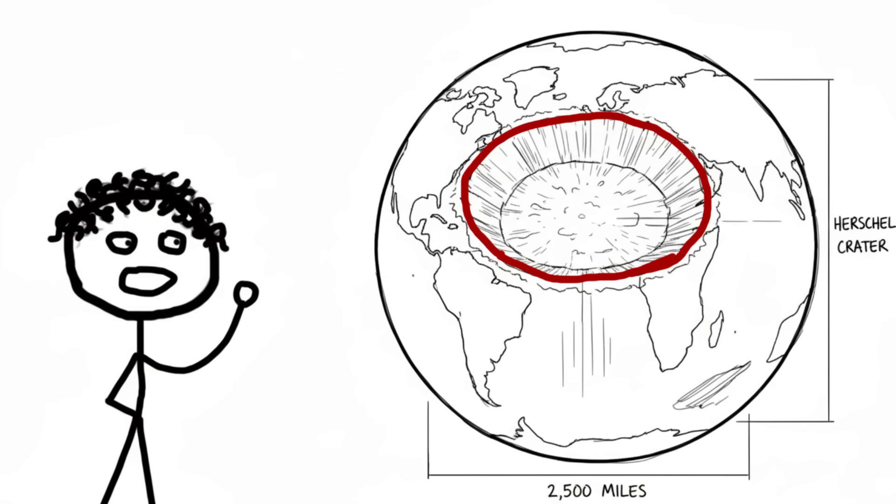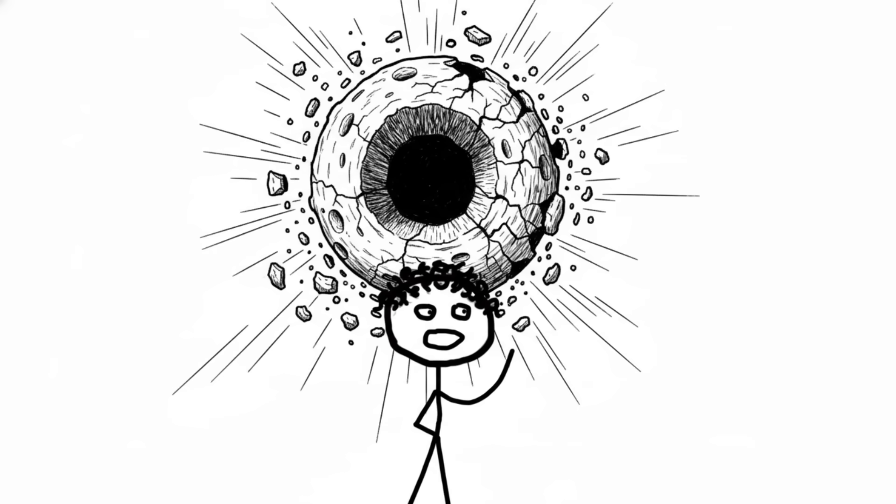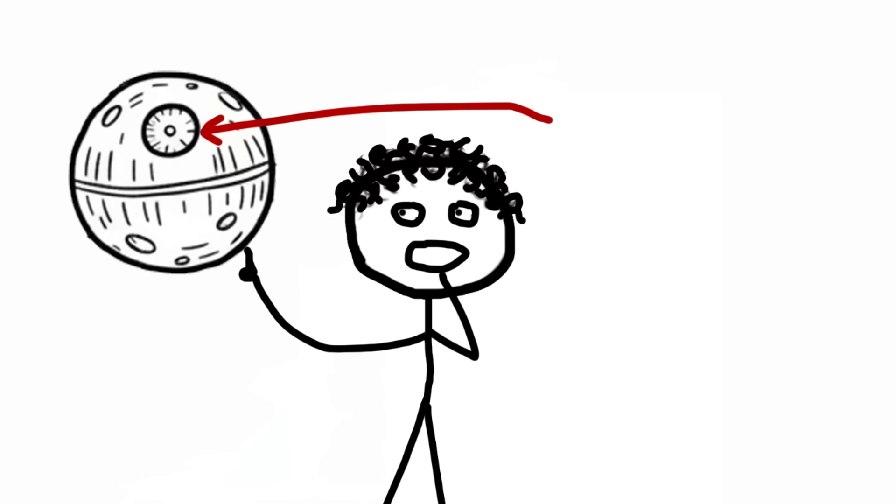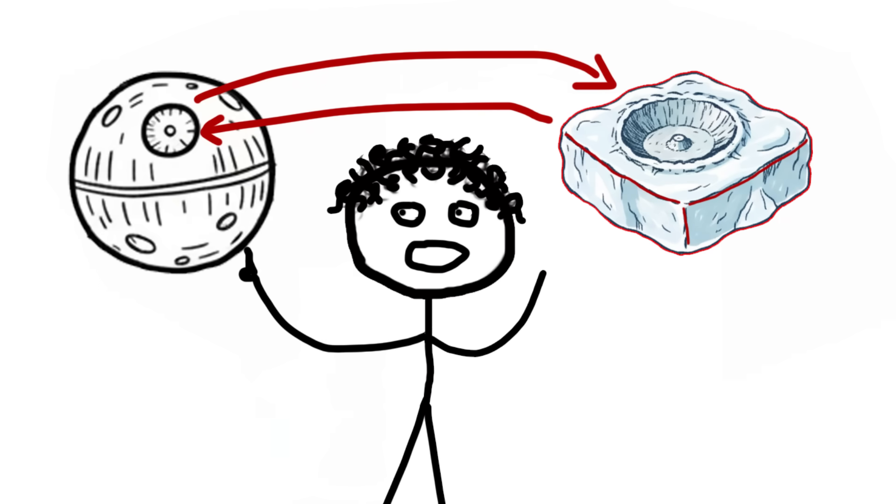The impact that caused it should have shattered Mimas entirely. It was a cosmic punch strong enough to reduce the moon to a million pieces of space gravel. Yet somehow Mimas just took the hit, shook off a little dust, and now just looks perpetually menacing. Why did it survive?